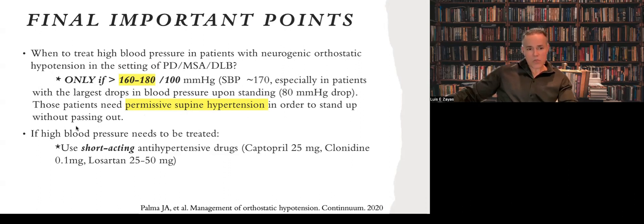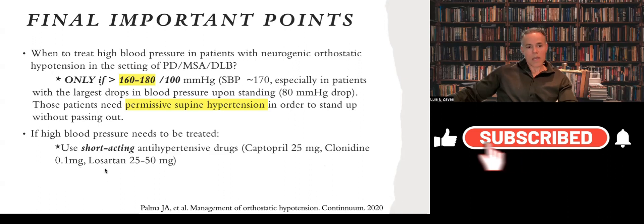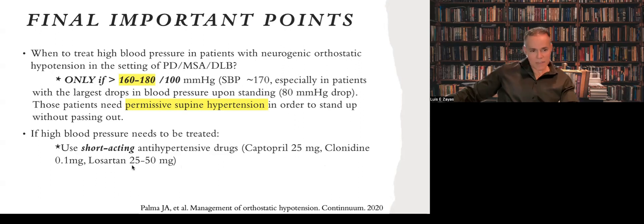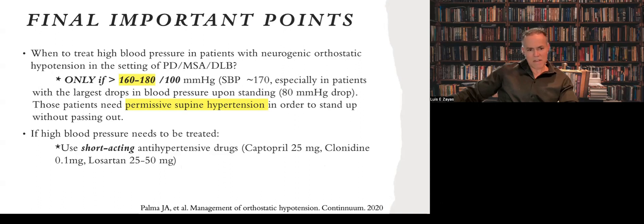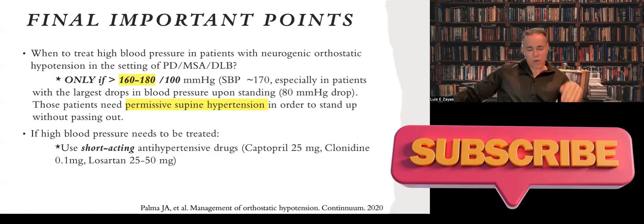If you really need to treat the blood pressure, always use short-acting antihypertensive medication — such as the older medication Captopril 25 mg, which is rarely used anymore except in these settings. Also Clonidine at a very low dose, and Losartan. I like Losartan because of its half-life, and I start with 25 mg. Remember that blood pressure tends to go high in these patients in the afternoon or at night when they are supine, while they tend to have low blood pressure in the morning.